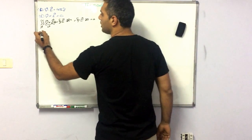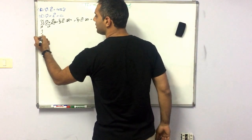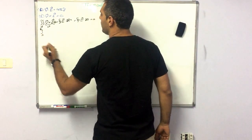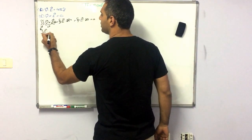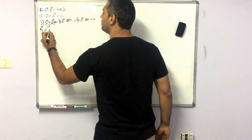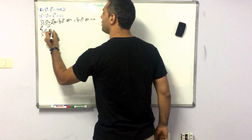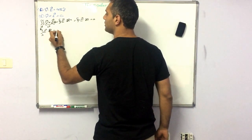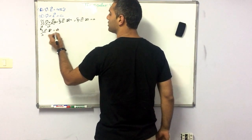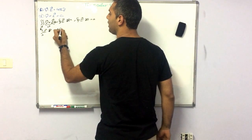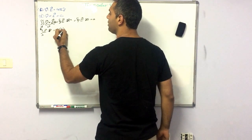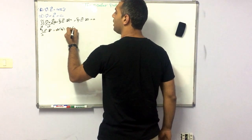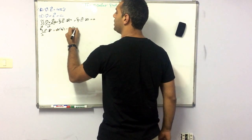So I can write the integral from A to B of E dot dL equals some scalar function φ(r_A) minus φ(r_B).